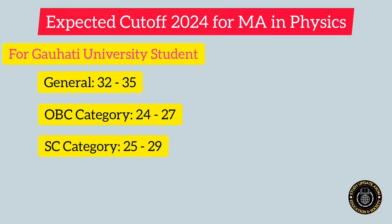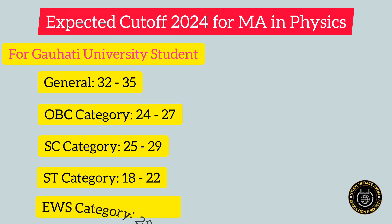For the SC category, the cutoff may be in the range of 25 to 29. For the ST category, including both ST Hills and Plains, the cutoff may be in between 18 to 22. For students belonging to the EWS category, the expected cutoff may be in between 25 to 30.